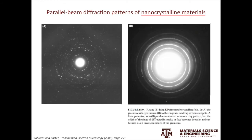Looking at a couple of textbook examples: the diffraction rings on the left are more discrete, while the ones on the right are more continuous. If the size of the selected area aperture is the same, one could conclude that the specimen on the right has finer grains.